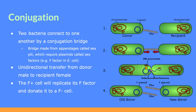Lastly, we have conjugation. In conjugation, two bacteria connect to one another by a conjugation bridge. The bridge requires appendages called sex pili, which further require plasmids called sex factors — the most studied of which is the F factor, or fertility factor, in E. coli. Conjugation involves unidirectional transfer from the donor male to the recipient female. The donor male has an F plasmid, whereas the recipient at first does not. The donor male replicates its F factor and donates it to the recipient via the conjugation bridge formed from the pili. Once the recipient has the F plasmid, conjugation is complete, and that recipient can now act as a donor to other bacteria.